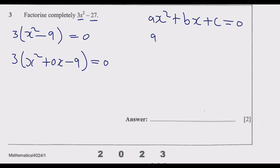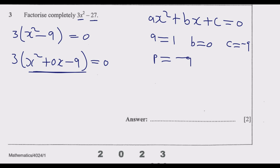Focusing on what is in the bracket — since we've already factored out 3 — we have x squared plus 0x minus 9. So a equals 1, b equals 0, and c equals negative 9. The product is negative 9 and the sum is 0. Because the sum is 0, we look for two numbers whose product is negative 9 and sum is 0, which means we need the square root of 9, which is 3. One must be positive and one negative: positive 3 and negative 3, since negative 3 times positive 3 is negative 9 and negative 3 plus 3 is 0.